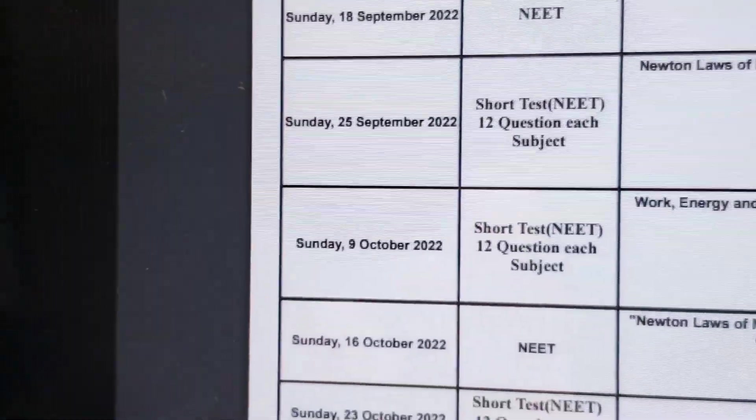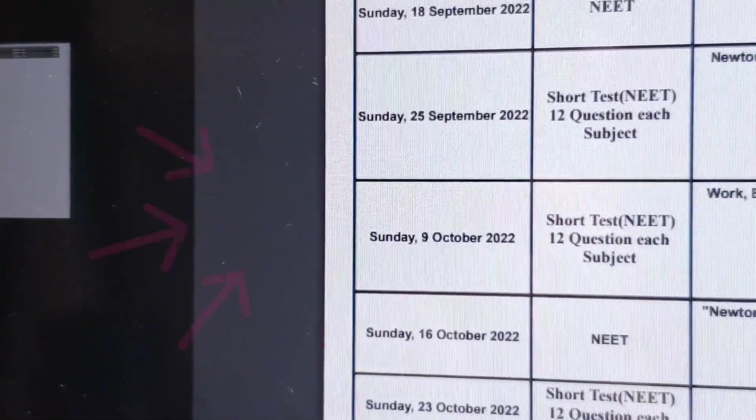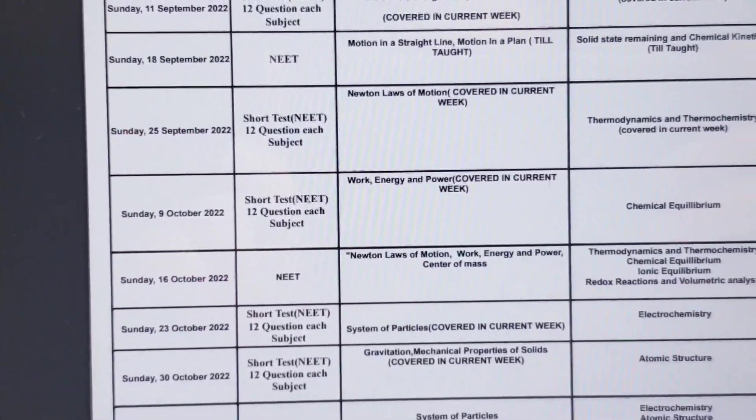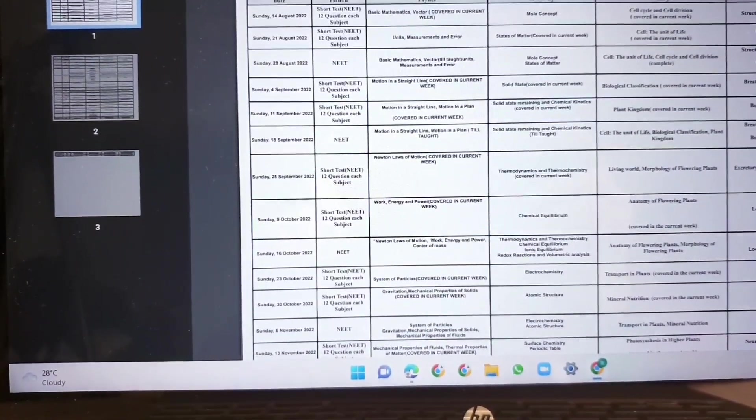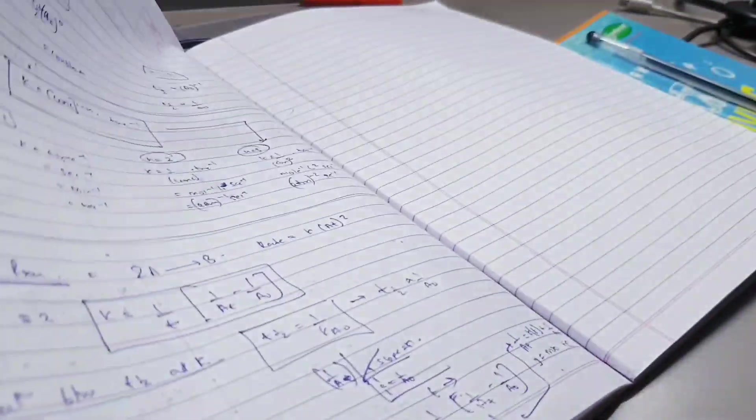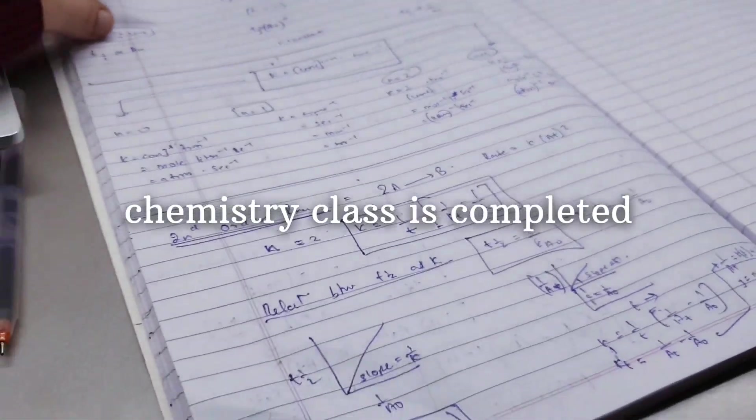I guess there won't be any test on the upcoming Sunday, which is October 2nd, as it's not mentioned in the test planner. Please let me know when the test syllabus is out.